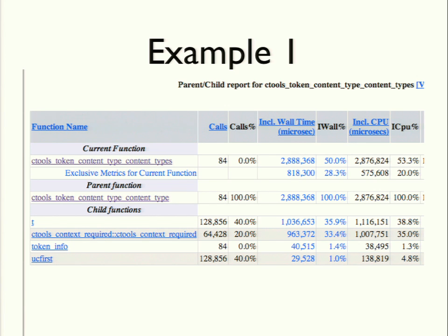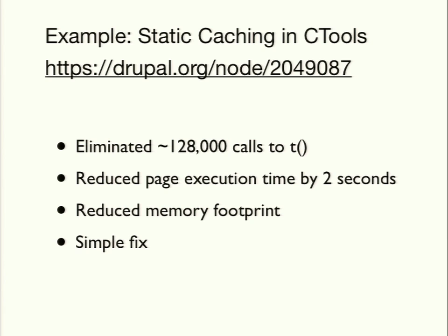This was a real-world example — the fix was very simple: we just needed to add a static cache to ctools. Adding that static cache eliminated 128,000 calls to 't', reduced page execution time by two seconds out of almost a three-second page load, and significantly reduced the memory footprint. I would never have speculated that we were calling 't' too many times and needed a static cache. But with XHProf, it sticks out almost like a sore thumb once you're used to looking at that data, and the remediation is very easy.